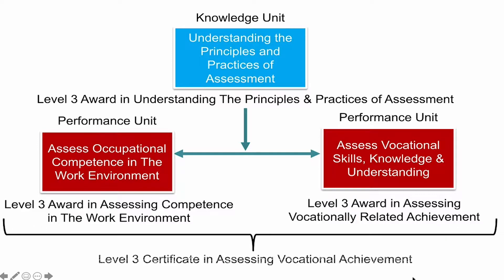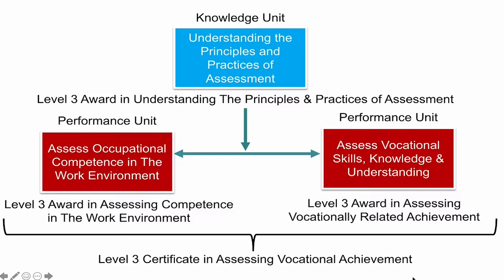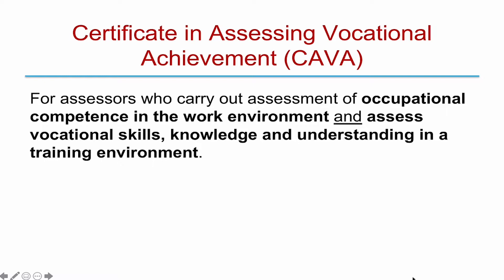Then there's a Level 3 Certificate in Assessing Vocational Achievement. Although it's called a Certificate, it's not a higher level than the awards — it means you've done all three units: the Knowledge Unit and both Performance Units. You can progress to that or do all three in one go. This is for Assessors who carry out assessment of occupational competence in the work environment and also assess vocational skills, knowledge and understanding in a training environment. For example, if you're employed and need to assess members of staff on their job but also get them to come into a classroom for training courses, that's the certificate you'd want.